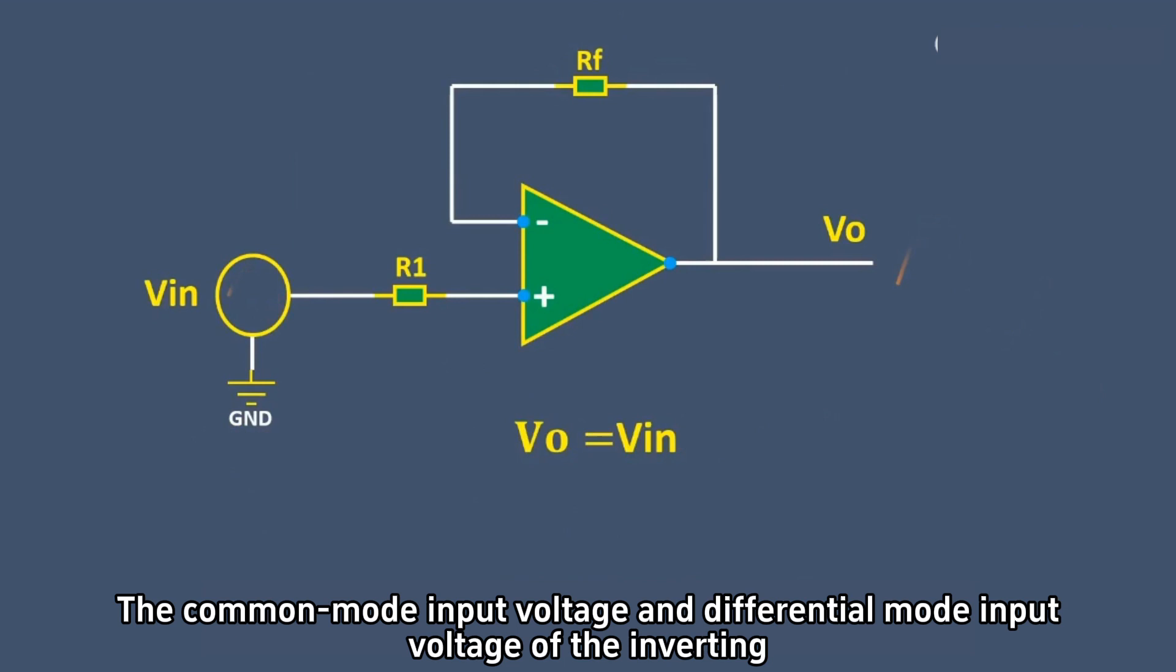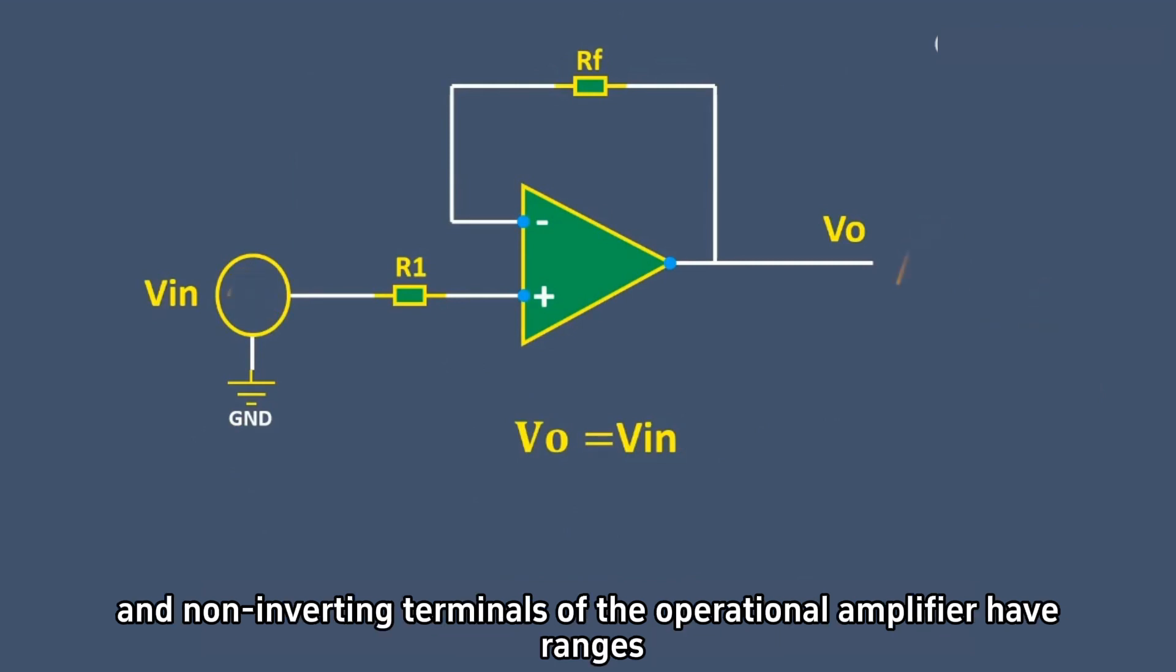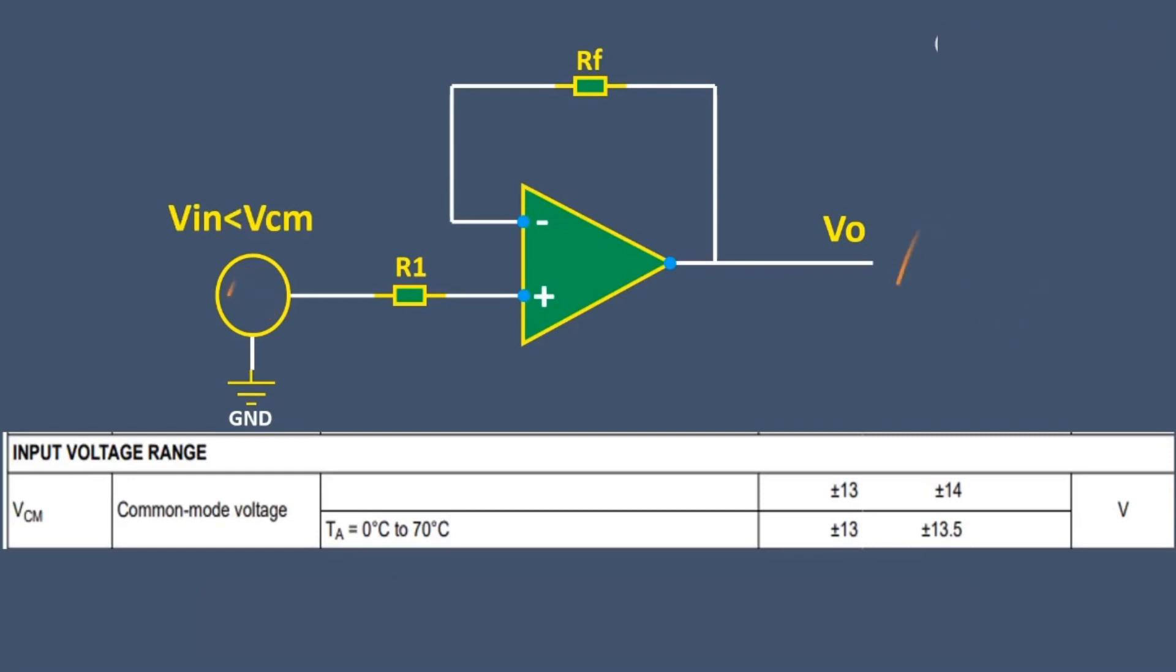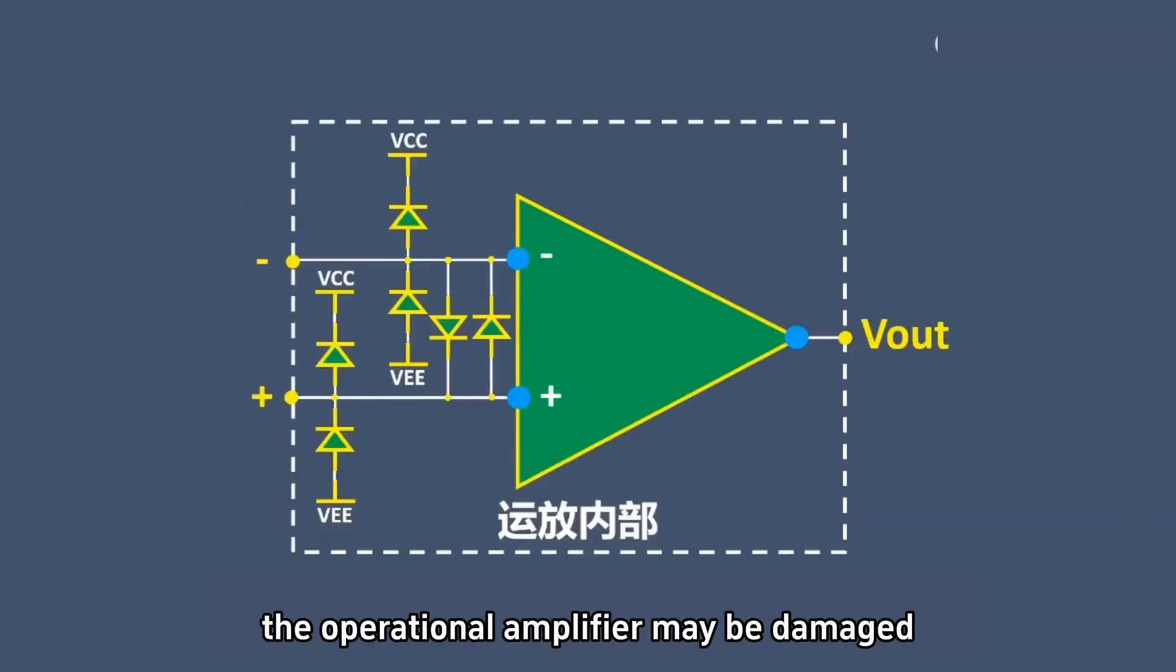The common-mode input voltage and differential-mode input voltage of the inverting and non-inverting terminals of the operational amplifier have ranges. When the input voltage exceeds this range, the operational amplifier may be damaged.